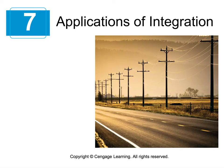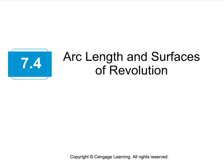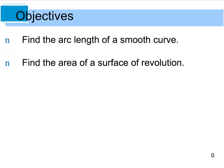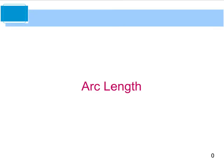Welcome back to chapter 7. Today we're going to look at section 7.4 which deals with arc length and surfaces of revolution. Our objectives are going to be to find the arc length of some smooth curve and also to find the area of a surface of revolution, as in section 7.3 we were looking at volumes. So let's begin by looking at arc length.